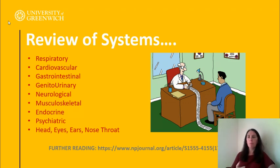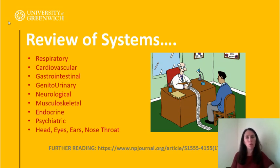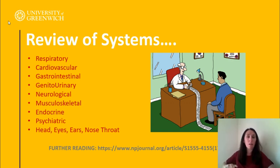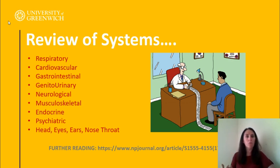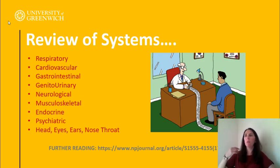Review of systems means everything else. With a chest pain, your main focus will be a cardiovascular assessment — maybe respiratory too because they go hand in hand. You're probably not going to do musculoskeletal unless you think it's gym-related. But the review of systems covers all that. Even if you're doing a respiratory assessment, go through all the other systems — so with abdominal: have you got any abdominal pain alongside the chest pain?